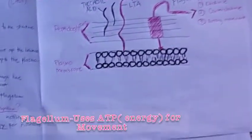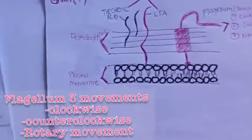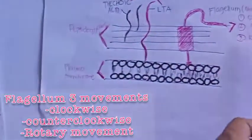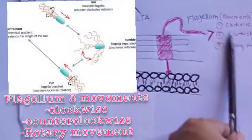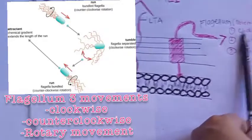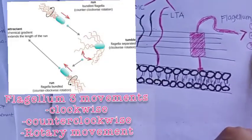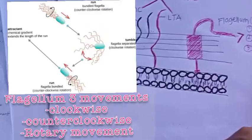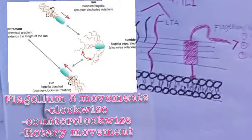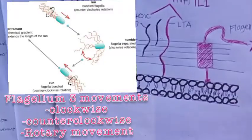The movement of bacteria has three types. First, clockwise movement provides a jet-like movement. Second, counterclockwise movement causes tumbling. Third, if the flagellum is wrapped around the bacteria, it gives a rotary movement.